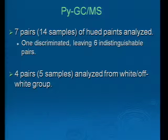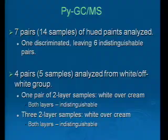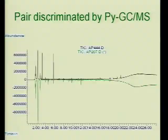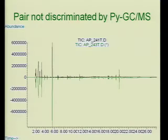In the white and off-white group, one pair of two-layer samples — which was a white over a cream layer structure — had both layers indistinguishable by pyrolysis. There were three two-layer samples, again white over cream, where both layers in each of those samples were also indistinguishable. Here's a pyrogram depiction of pairs that were discriminated by pyrolysis — these happen to be one of the hued pairs. You can see the styrene discriminates these samples quite readily, and here's a pair that was not differentiated by pyrolysis.